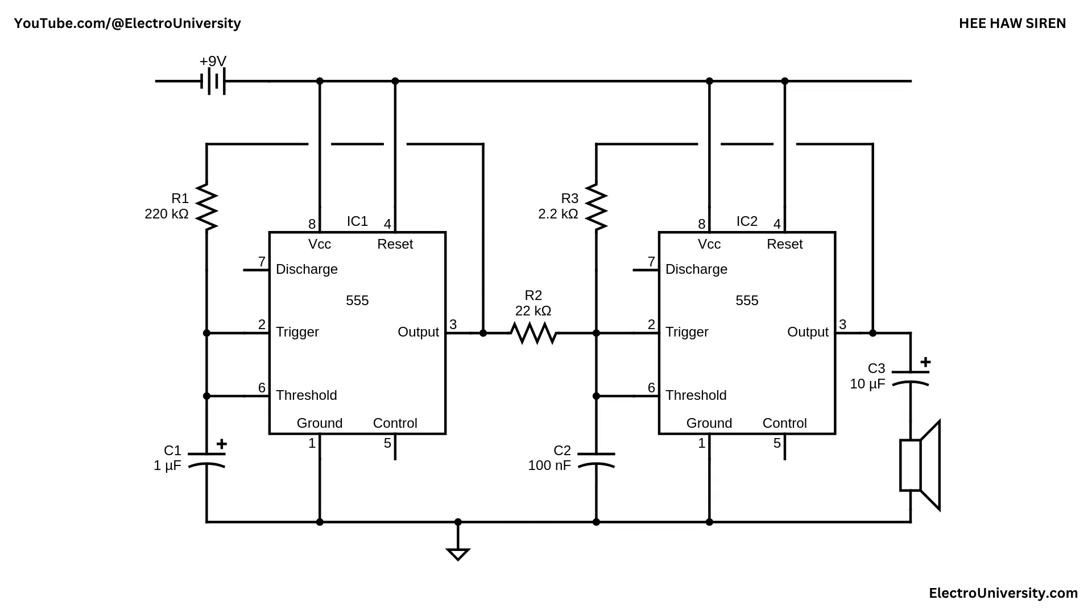Let's dive into the circuit and break it down step by step. This is a Hee Haw siren circuit built using two 555 timer ICs. The design generates a two-tone siren sound often heard in emergency vehicles. The core of the circuit relies on the astable configuration of the 555 timers to modulate frequencies and create a warbling audio tone. The first 555 timer is configured as a low frequency oscillator.